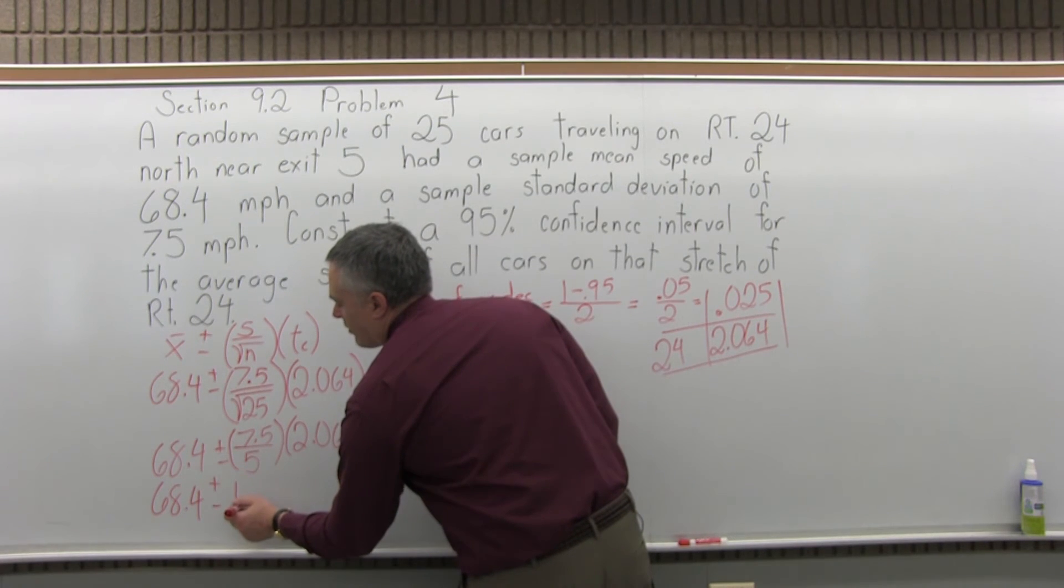So the next thing I can do is divide 7.5 divided by 5. So I have 68.4 plus or minus 7.5 divided by 5 is 1.5. And you can do that on your calculator if you like. I know that 75 over 5 is 15 and I just put the decimal back. But if you're not comfortable doing tricks like that, just take a second on your calculator, do 7.5 divided by 5 equals. And the calculator will tell you it's 1.5.